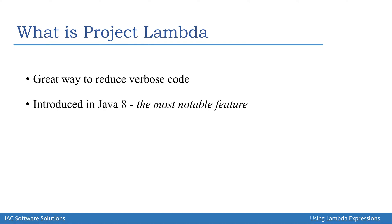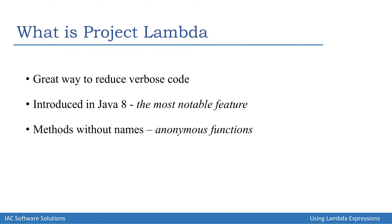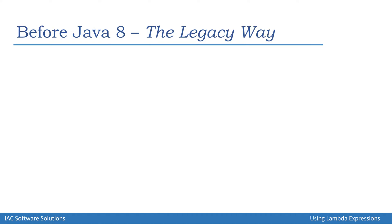Lambda was implemented in the language when the eighth version came along and it proved to be the most notable feature. It lets us define methods without names — that is, anonymous methods. That sounds strange at first, but we wouldn't even need names for these methods, because it lets us define a class with only a single method, and that class implements an interface which only has one method.